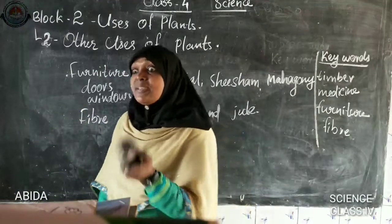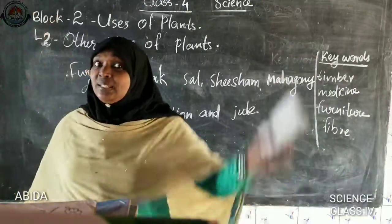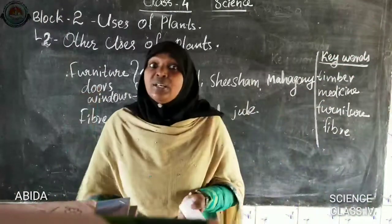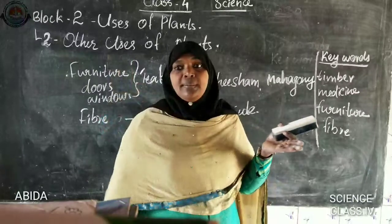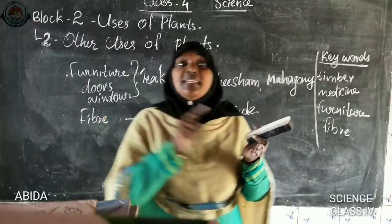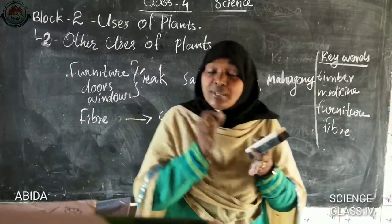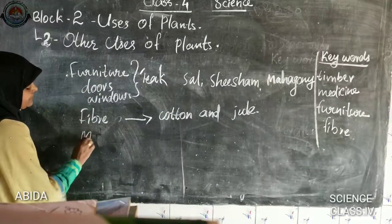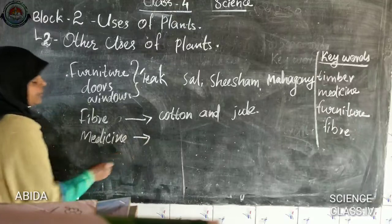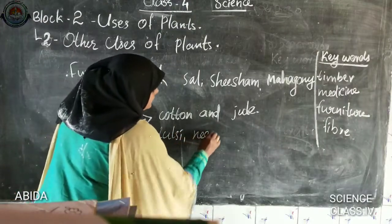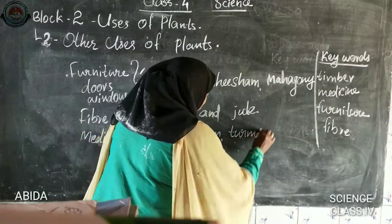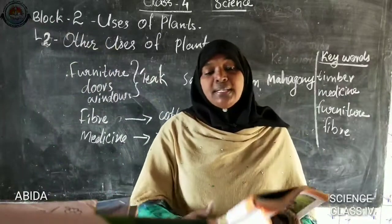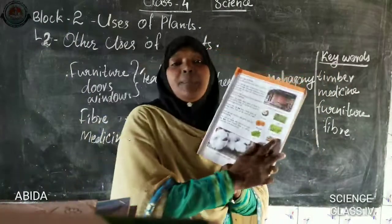Some plants we use as medicine — yes, tulasi and turmeric. When we cut our hand, our mother takes turmeric powder and applies it to the wound. Turmeric is a medicinal plant and its powder will cure our wound. Medicinal plants include tulasi, neem, turmeric, and mint. Many more plants are given in your textbook — you have to read LP 2.